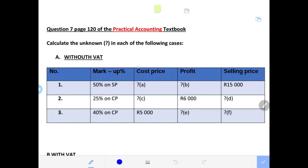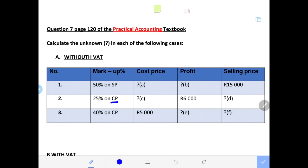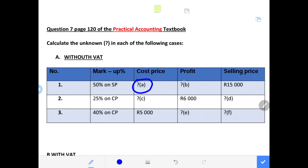We have the cost price, profit, and selling price as indicated. Note that the cost price will not always be at 100% — it will only be at 100% where the markup percentage is on cost price. We are therefore required to calculate the unknowns in each of the following cases: A — cost price is missing, B — profit is missing, C — cost price, and D — selling price.